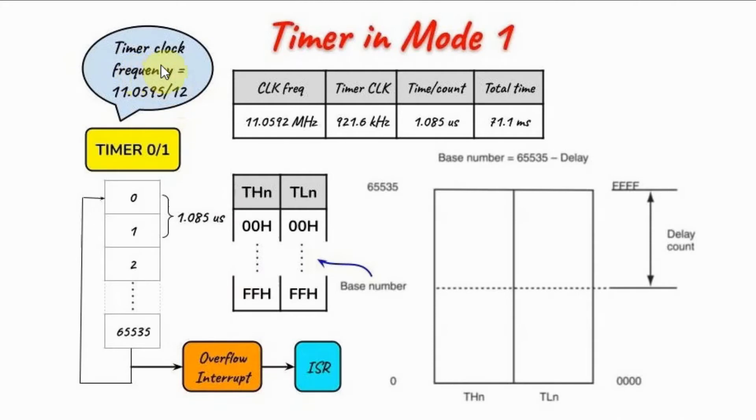The timer clock frequency is the crystal clock frequency divided by 12. The reason for this division is that one machine cycle of the microcontroller requires 12 clock pulses. The crystal clock used in this video runs at 11.0592 MHz. If we divide this by 12, we get the timer clock frequency which is 921.6 kHz. The time per count is the reciprocal of this, which is 1.085 microseconds.